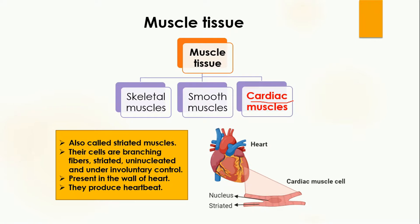The third type is cardiac muscle. The word cardiac is used for the heart, so cardiac muscles are present in the heart. They are striated muscles, meaning they contain these parallel lines. Unlike the long skeletal muscle fibers or the spindle-shaped smooth muscle cells, cardiac muscle cells are branching fibers — you can see branches generating from the cell.